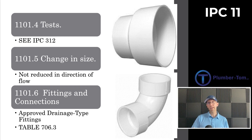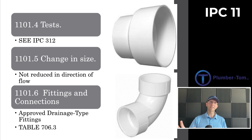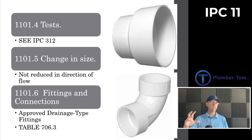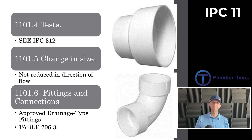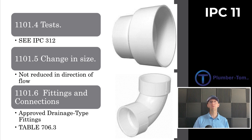1101.5 speaks to the change of pipe size. Just like any other drainage system, we are told not to reduce the pipe size in the direction of flow — this could cause a possible blockage. When a size gets bigger, it remains bigger; we never shrink as we go. 1101.6 covers fittings and connections, stating we'll use the same type of fittings and pipe as in Chapter 7, referring us to Table 706.3.